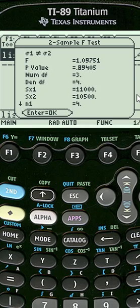We get the output of an F test statistic of 1.0975 and a p-value of 0.89. If we were running this test at a 5% level of significance, we would fail to reject the null because the p-value is much larger than alpha.